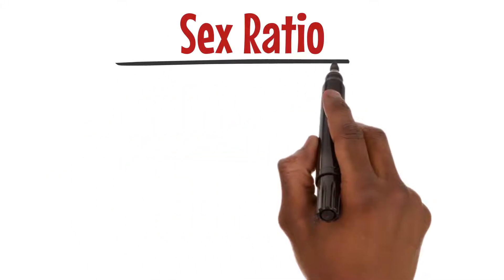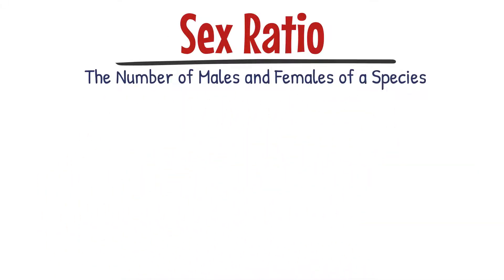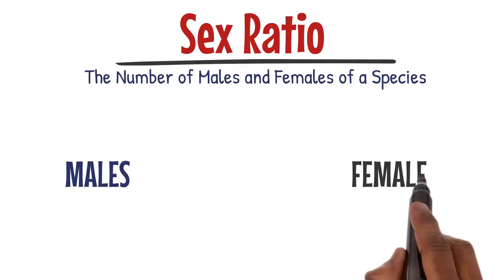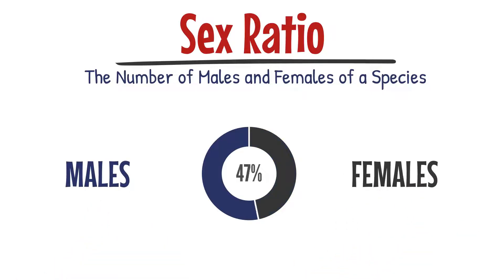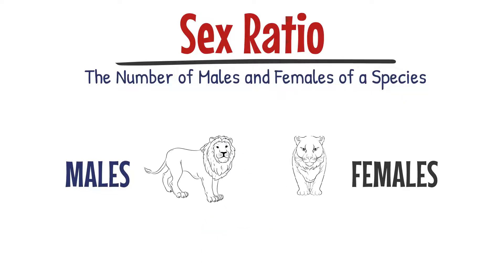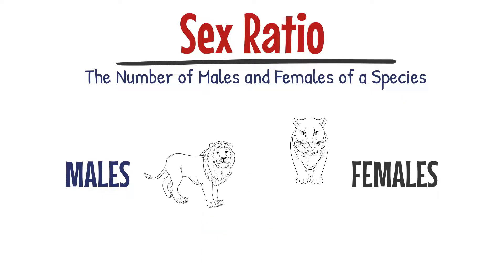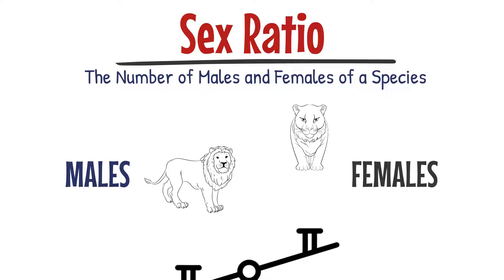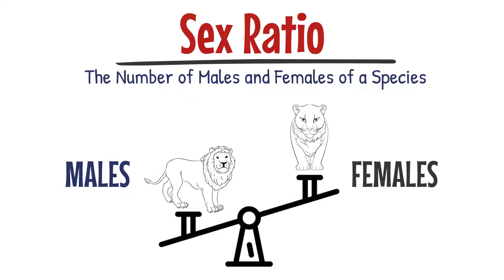Next topic is sex ratio. Did you know that in some populations the number of males and females can be different? In some animal species like lions, there are more females than males. It's a bit like a lopsided seesaw.